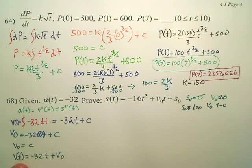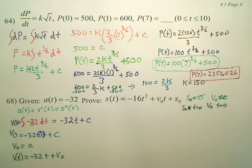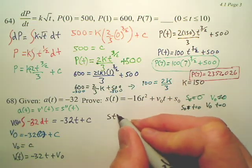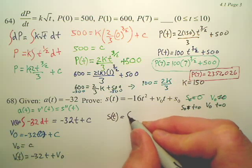So, velocity function is equal to negative 32t plus v of 0. Okay. If I want my position, if I want to find my position function, what you're going to do is you're going to integrate this.